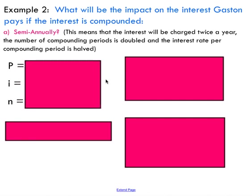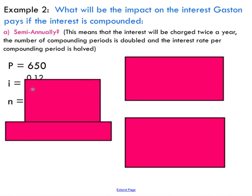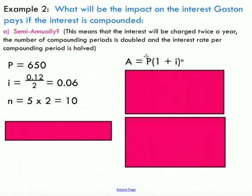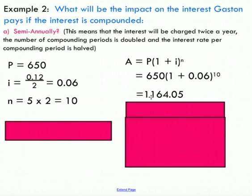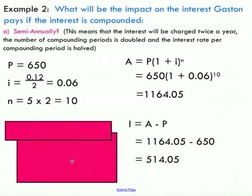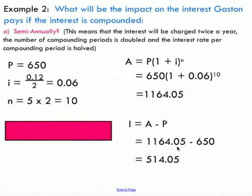Using the same principal and interest rate, but dividing the rate by two because we're compounding semi-annually — we get half the interest rate each period. Our compounding periods are multiplied by two: five years times two gives us N equals 10. Substituting everything into the compound interest formula, we end up with $1,164.05. Subtracting the principal, we're paying $514 in interest. Comparing: annually the interest was $495.52, and semi-annually it's $514 — we're paying more interest by compounding semi-annually.